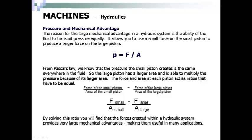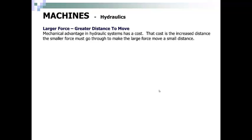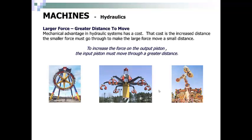By solving this ratio, you will find that the forces created within a hydraulic system provides a very large mechanical advantage, making them useful in many applications. A mechanical advantage in hydraulic systems has a cost. That cost is the increased distance that the smaller force must go through to make the larger force move a small distance. To increase the force on the output piston, the input piston must move through a greater distance.